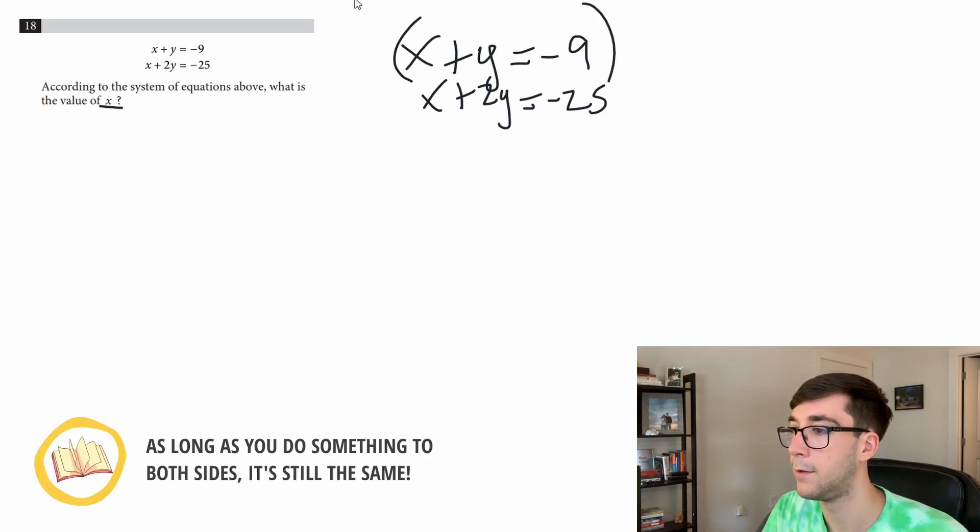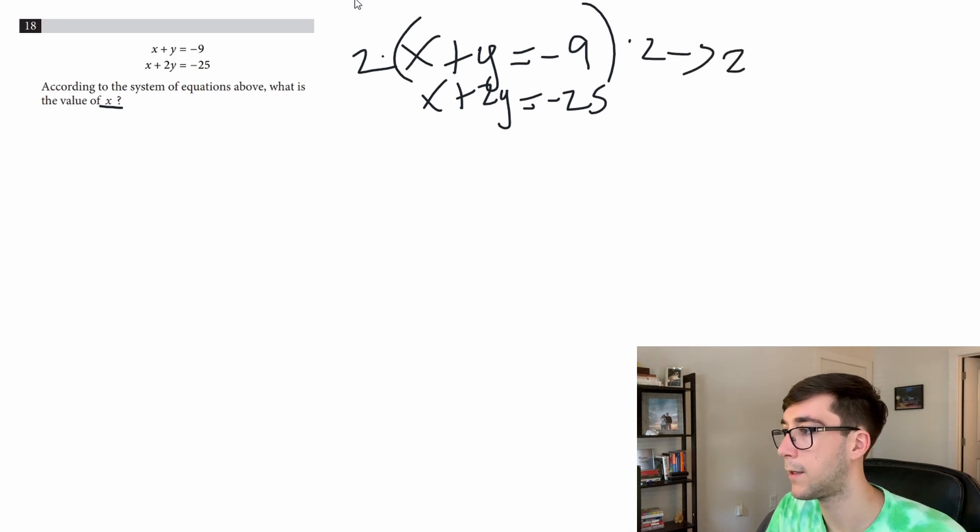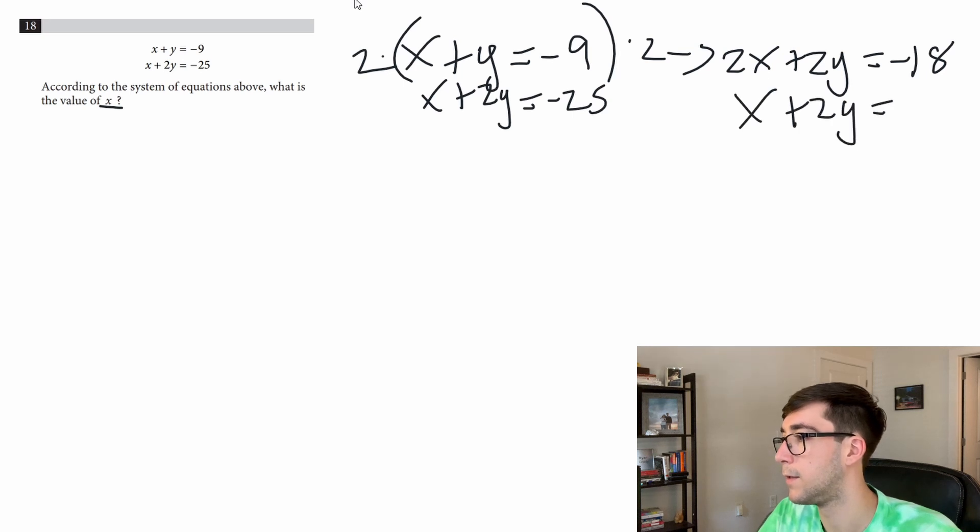So multiply it by 2 on this side and on this side it becomes 2x plus 2y equals negative 18. Make sure to multiply everything by that scale. A lot of people mess up with this and only multiply half of it or some numbers and that's going to throw you off. And now we got x plus 2y equals negative 25.